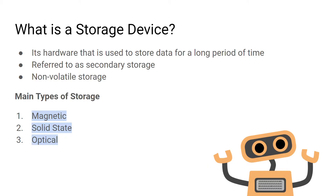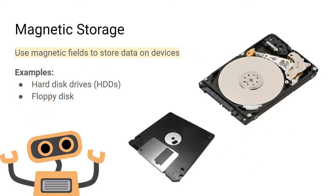A storage device is a hardware component that stores data for a long period of time. It can be referred to as secondary storage, meaning the data stored on it is not accessed directly by the CPU. The data stored on it is non-volatile, meaning when the power is turned off the data remains. There are three main types of storage: magnetic, solid state, and optical.